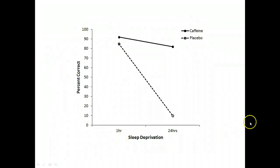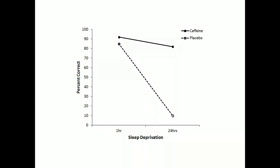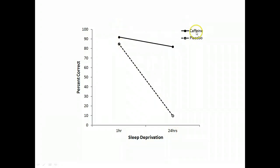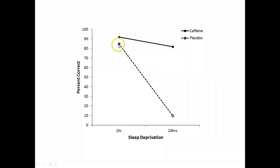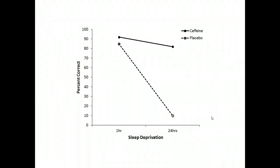We have the data here — this is just made-up data, but it will suffice for this example. Whenever you're presented a plot, the first thing you should do is orient yourself regarding the axes and what the data are actually showing before you try to work out whether there are main effects or interactions. Sleep deprivation is on the x-axis with two levels — one hour and 24 hours. The separate lines represent type of supplement: dark circles reflect the caffeine group and open circles reflect the placebo group. Percent correct is on the y-axis. In a two-way ANOVA, you'll be looking for two main effects and whether there's an interaction between the two factors.